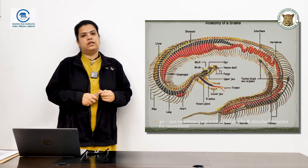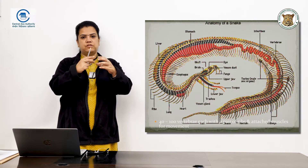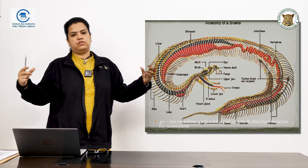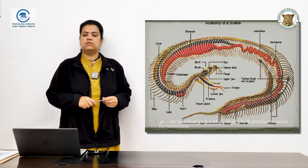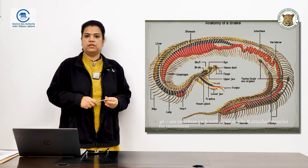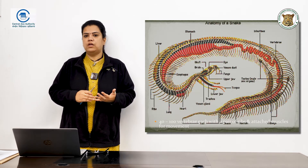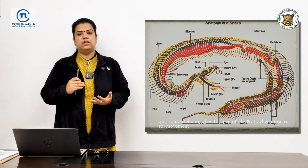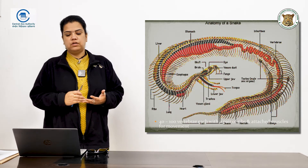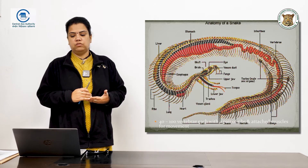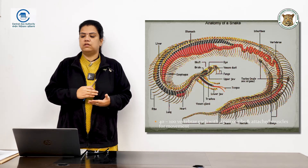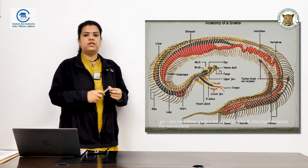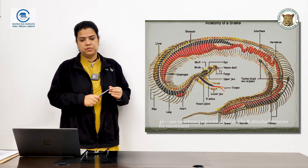If you look at the anatomy of the snake, imagine everything put into a tubular structure. They do have the same organs as we do — they have two lungs, though one of them is rudimentary. They have a liver, a stomach, an esophagus, and about 40 to 100 vertebrae depending on the species.